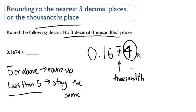So we're going to stay the same. We're going to end up dropping that four. We're going to say it's 0.167, and we don't care about that last digit. So 0.1674 is approximately equal to 0.167.